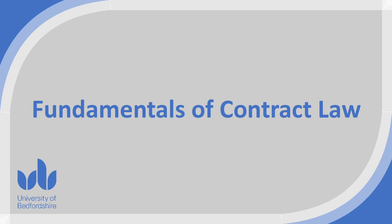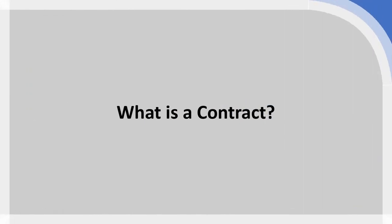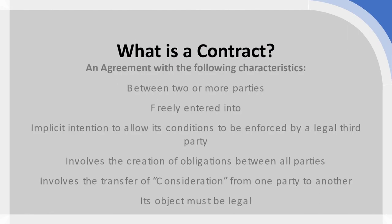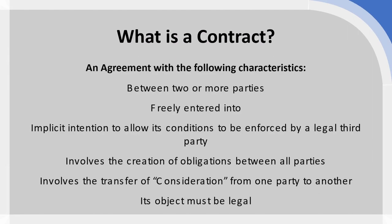Starting with the simple question of what a contract is exactly: a contract is an agreement between two or more parties which is freely entered into. There has to be genuine consent and the parties involved must have the capacity to actually enter into that contract. There has to be an actual intention for that contract and its conditions to be enforced by a legal third party — typically the UK legal system and UK courts.